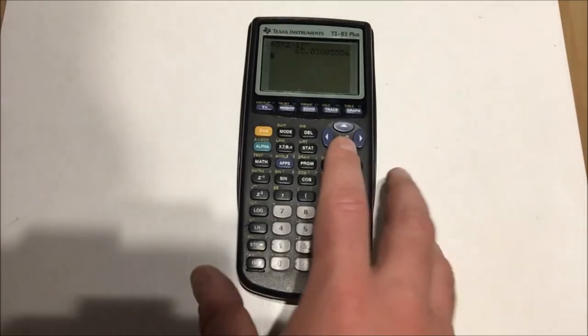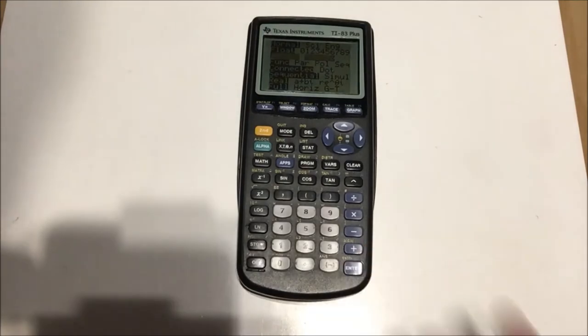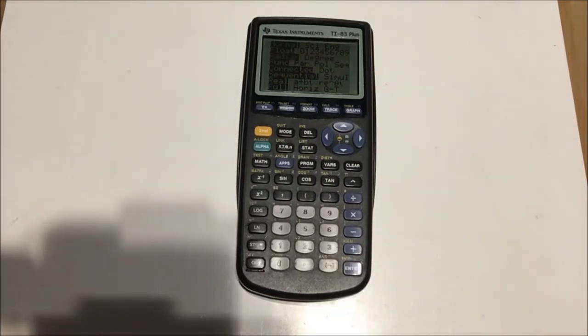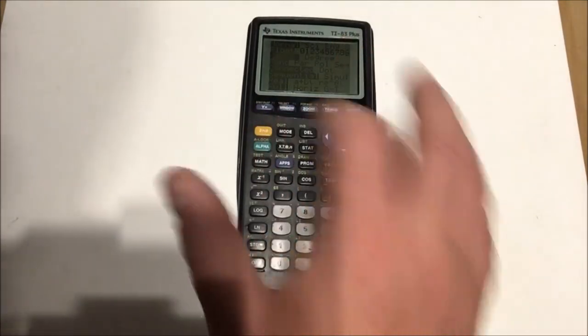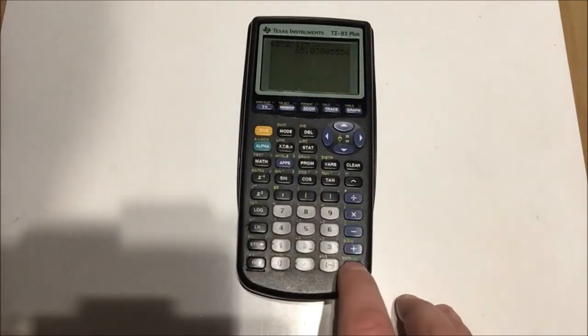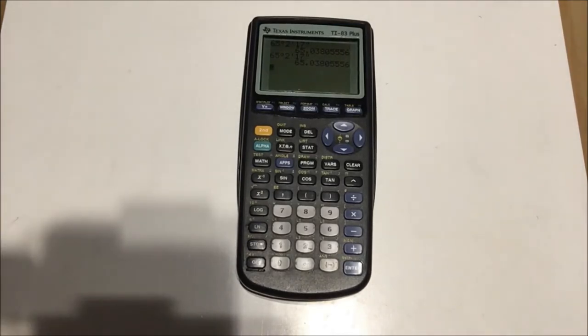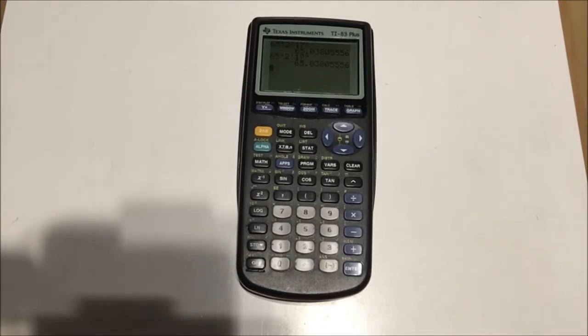Now again, I will prove to you that it doesn't matter what mode you're in. Currently I'm in degree mode. I will switch back to radian mode. It's not going to give me a different answer here, guys. So, quit this menu. Bring up that same calculation again by pressing second enter and press enter. Same exact answer. It will be in degrees even though you're in radian mode.